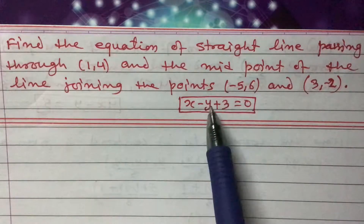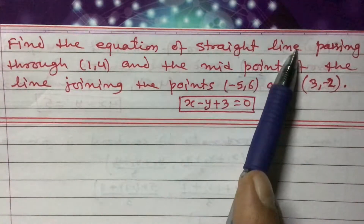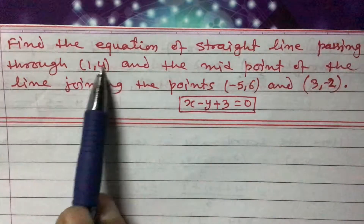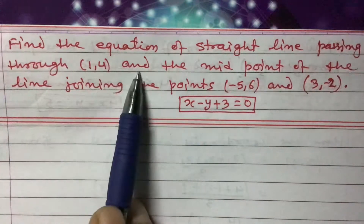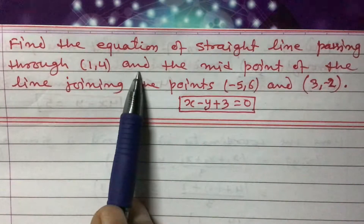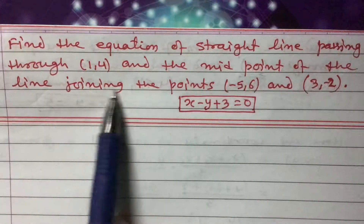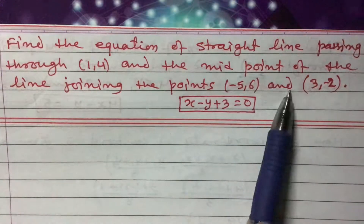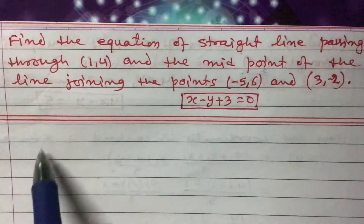Now let us find the equation of the straight line. We need to find the equation of a line that passes through (1, 4) — so x1, y1 is given as (1, 4). The other point is the midpoint of the line joining the two given points, so we need to find that midpoint first before we can find the equation.